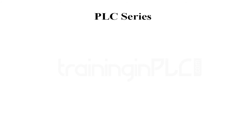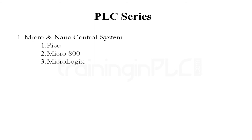All these five logics fit into one of the control system types. In the micro and nano control system category, you can find the Pico, Micro 800, and Micro Logic. These three types of PLCs are for small-type control systems where the application is very limited, such as in a very small scale industry. Even within the Micro Logic PLC, there are many types depending on the CPU type, number of IOs, and memory.